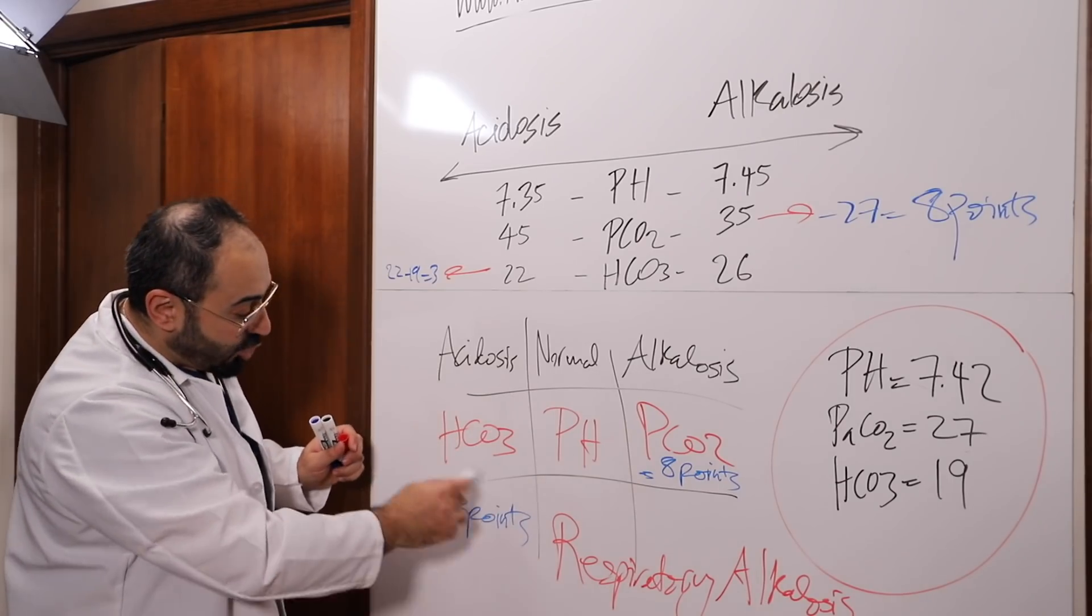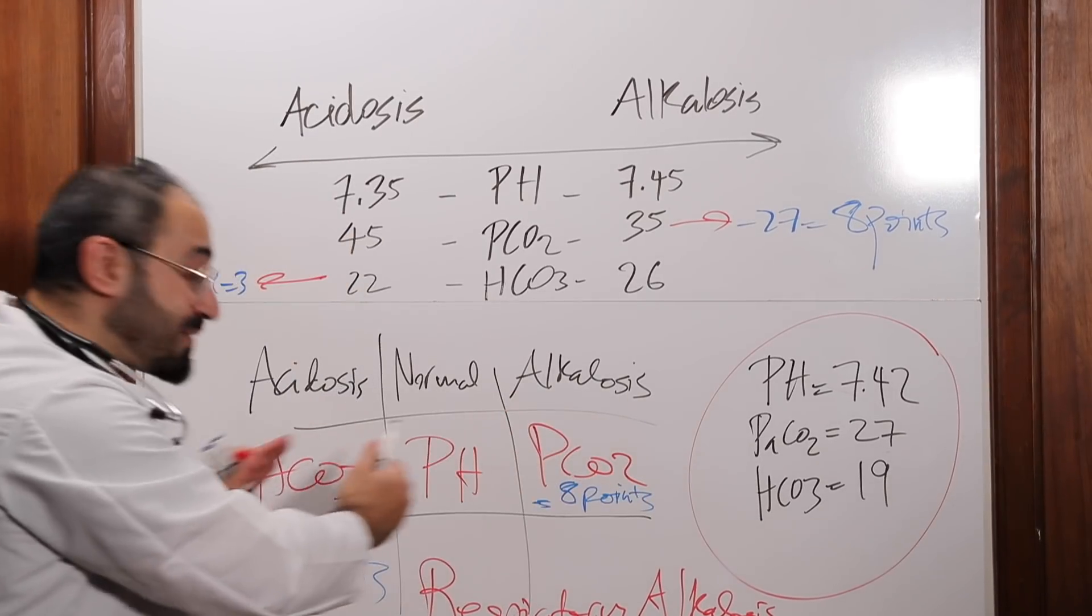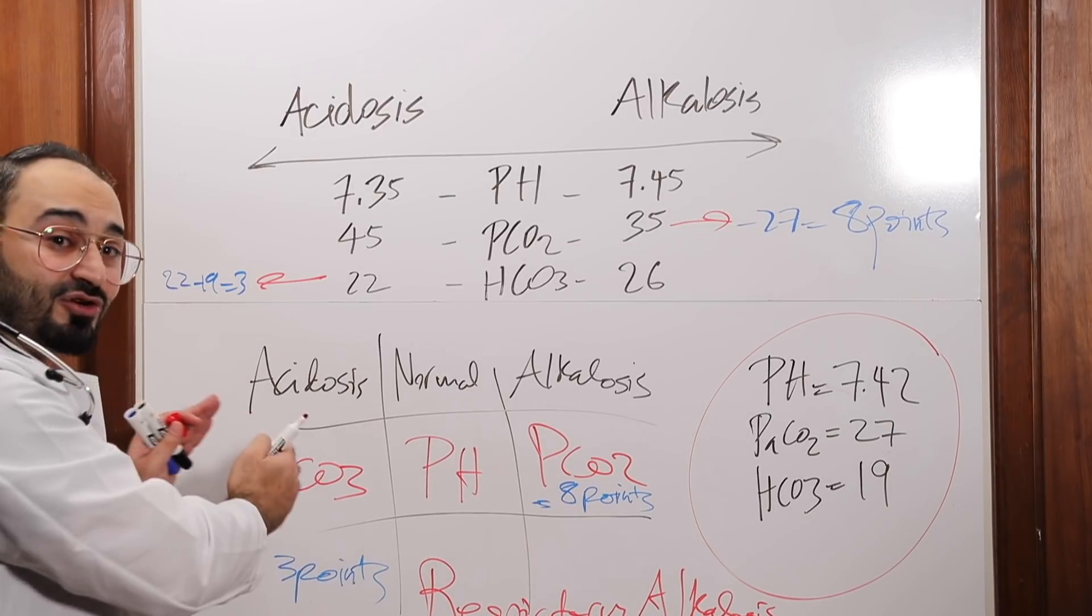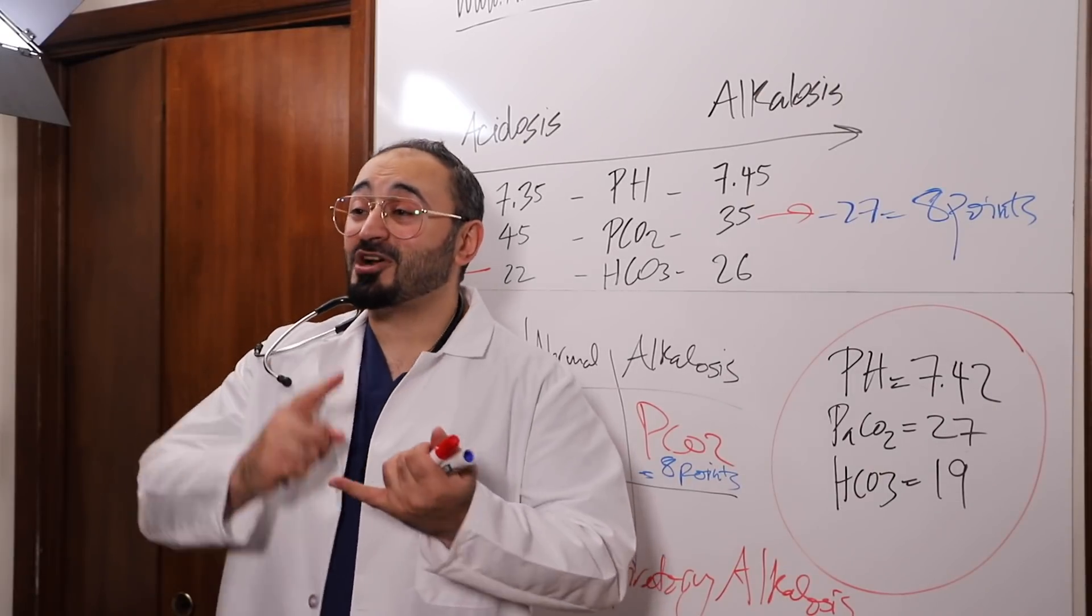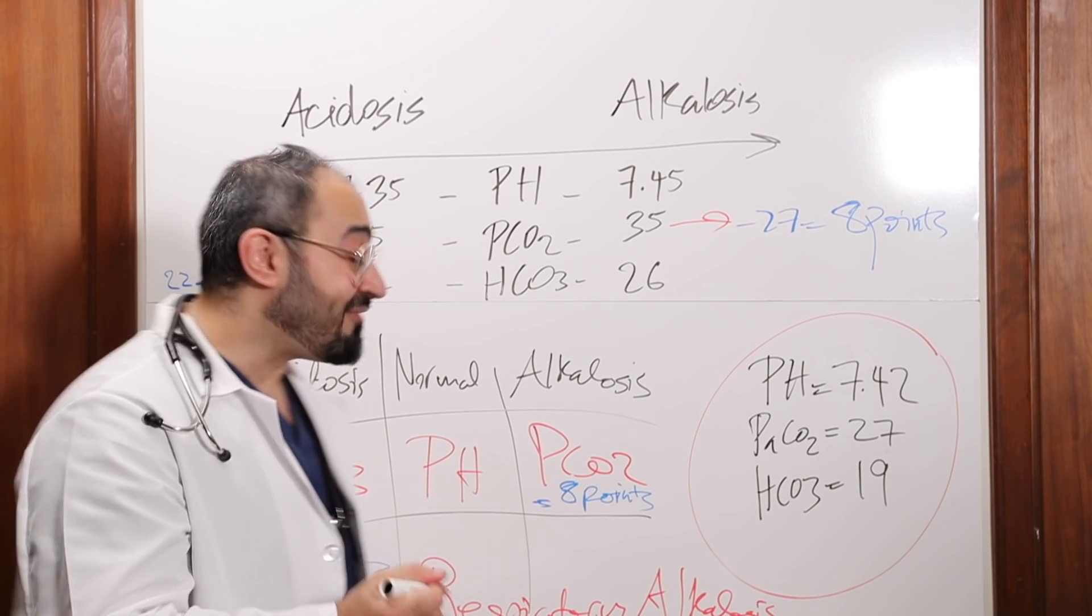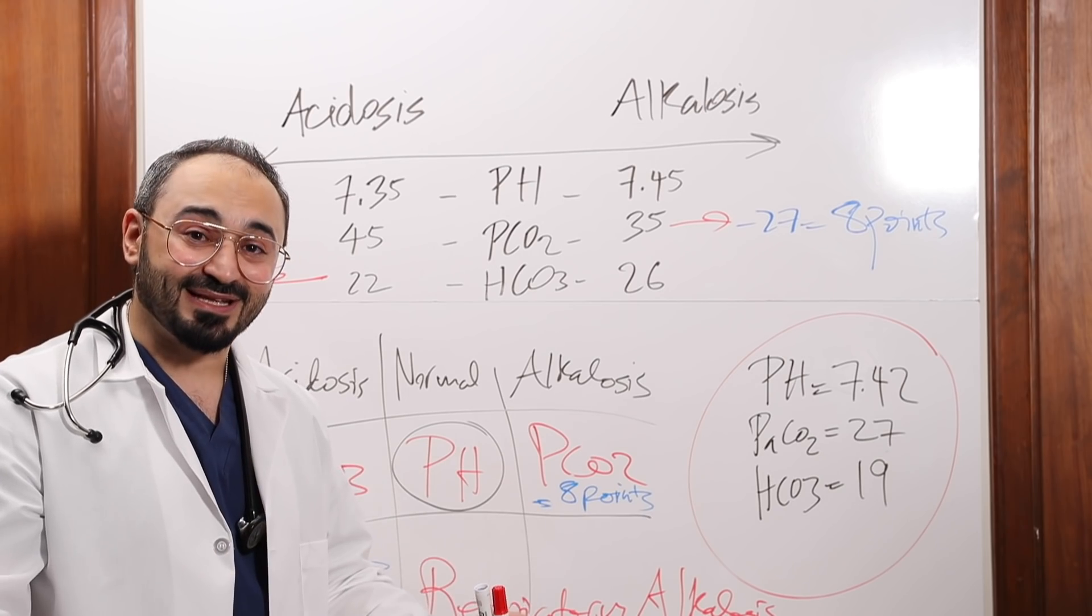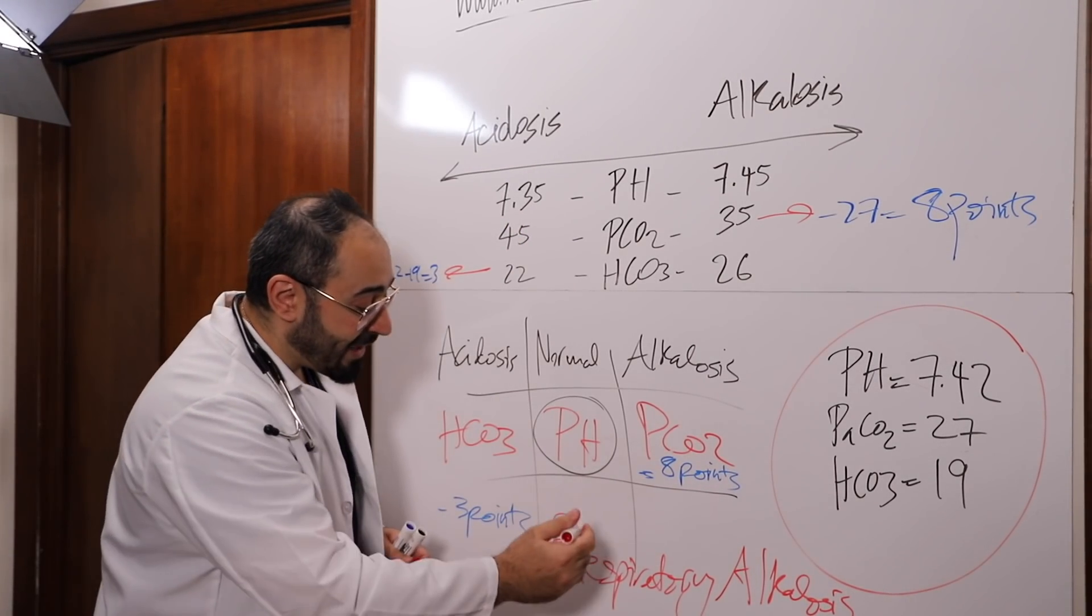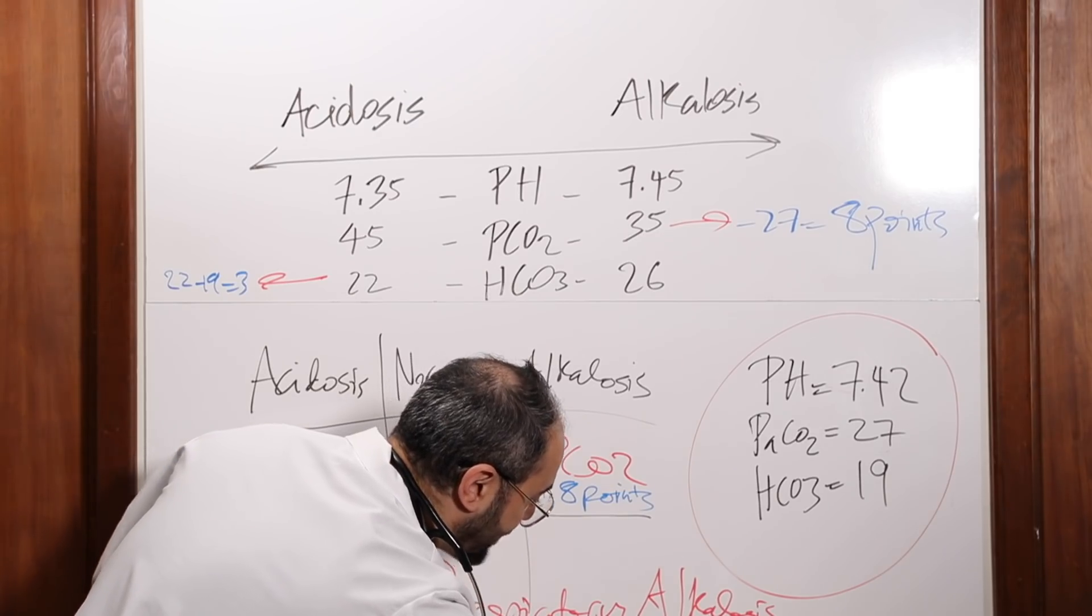If the bicarb had the more points, so I'm gonna say metabolic acidosis. If the CO2 was right here and it had the more points, so I'm gonna say respiratory acidosis because it's on this side. Now I wanna know if it is partially compensated, fully compensated, or uncompensated. Whenever the pH is normal, then it is fully compensated. That means the pH in the blood is normal. I have no problems. I'm gonna call it respiratory alkalosis fully compensated.